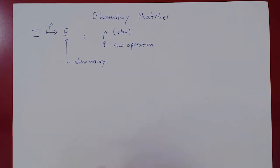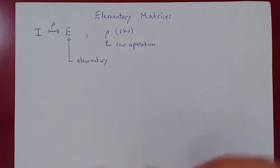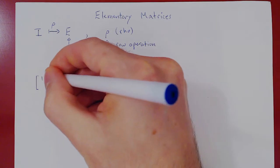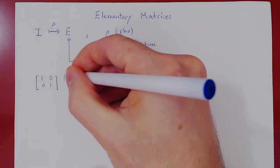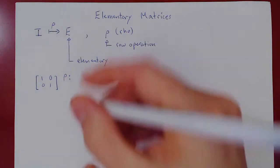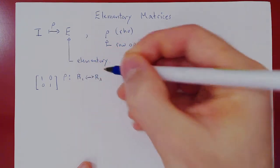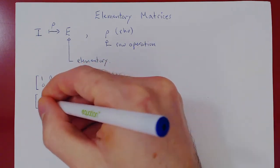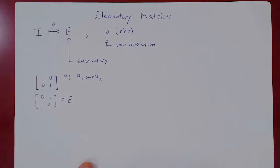Let's look at an example. Suppose you take a 2 by 2 square matrix for I: 1, 0, 0, 1. What's the first type of row operation? We can say that we interchange row 1 with row 2. So we apply to I that single row operation, and it becomes 0, 1, 1, 0. And this is now E — this is an elementary matrix.